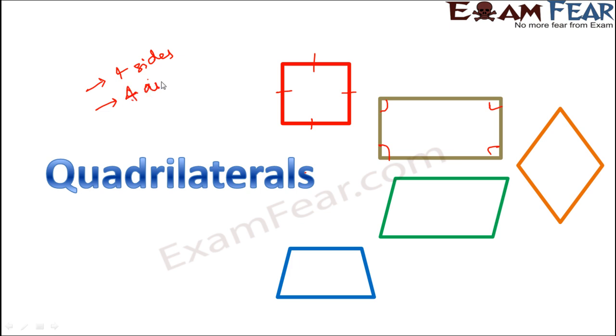Now if you know the measure of all of these, you would be able to draw a perfect quadrilateral. Now the question is, is it necessary to have all of these? Do we really need all four sides?